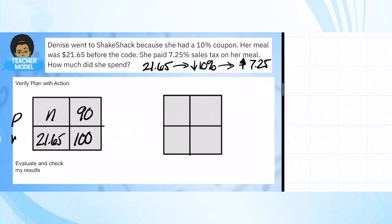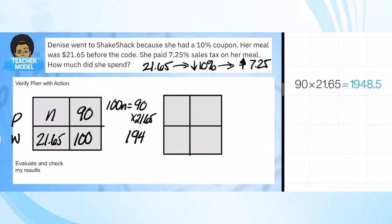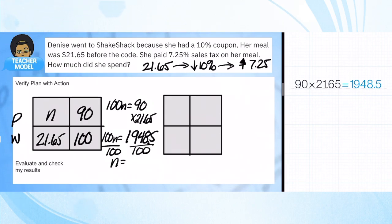$21.65 is 100%, and her price is going to go down 10%, so I just want to find 90% of that number. I have 100n = 90 × 21.65, and that gives us 1948.5. Dividing by 100, our new price is $19.485, which rounds up to $19.49. So that's our new price after she got 10% off — she saved a few bucks.